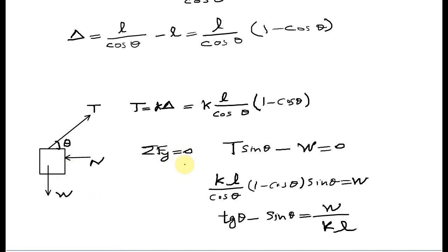I write the equilibrium along the Y direction: sigma F_Y equals zero. T sine theta is the first vertical force, and the other one is W, so T sine theta minus W equals zero.